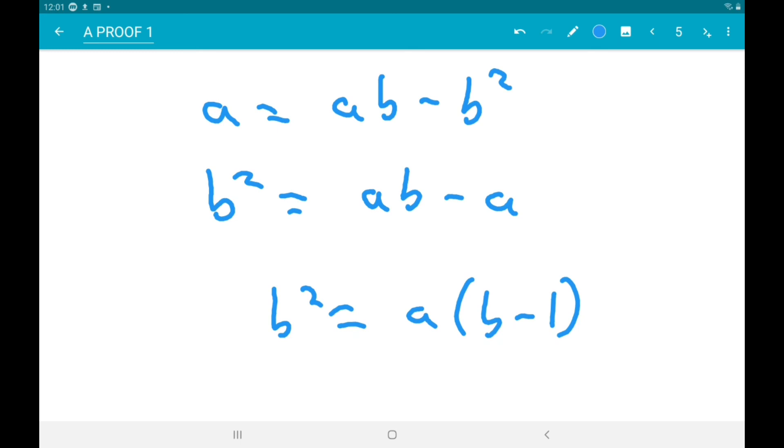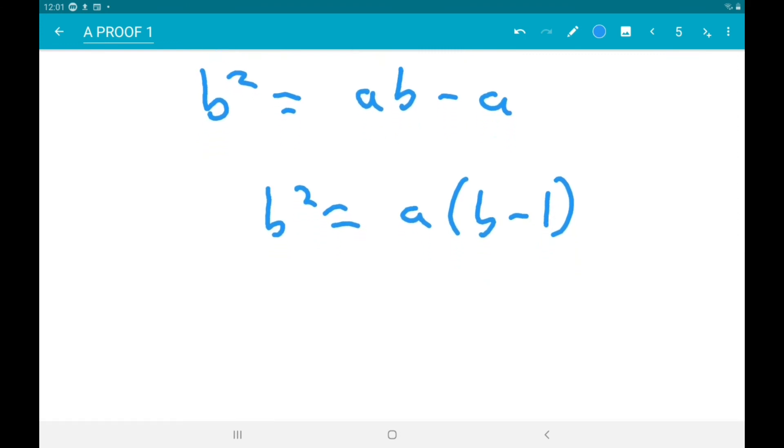And then, divide through by b minus 1. So, therefore, b squared over b minus 1 is indeed equal to a.